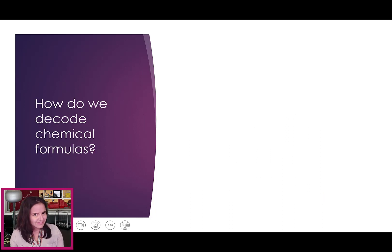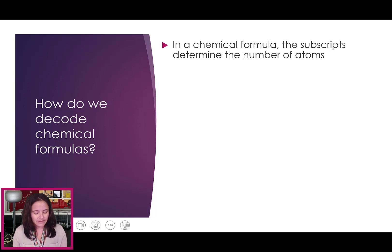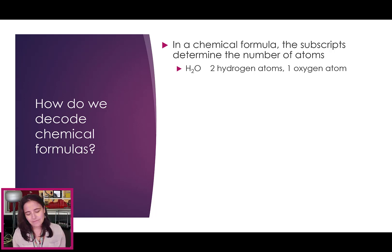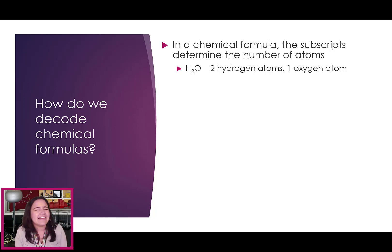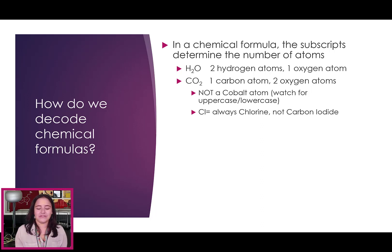So, how do we decode these chemical formulas? The subscripts determine the number of atoms. So H2O means two hydrogens and one oxygen. You might be asking yourself, where is the one? It's invisible — chemists don't like to write ones. So if there's no number there, there's an invisible one. CO2: one carbon, two oxygens.